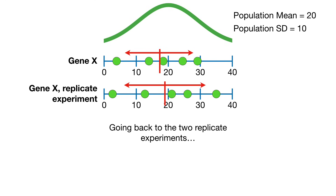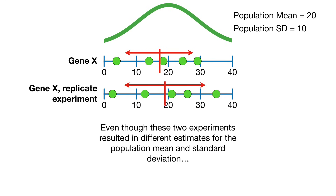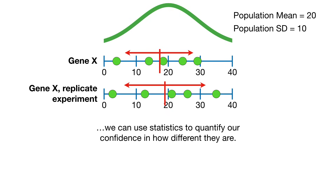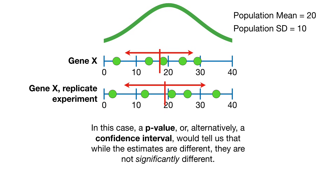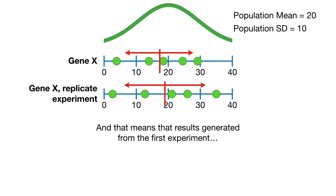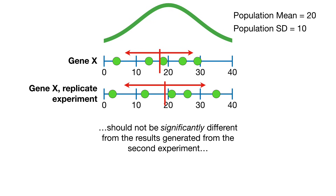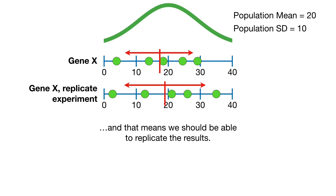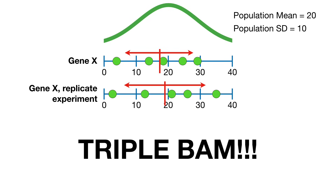Going back to the two replicate experiments, even though these experiments resulted in different estimates for the population mean and standard deviation, we can use statistics to quantify our confidence in how different they are. In this case, a p-value, or alternatively a confidence interval, would tell us that while the estimates are different, they are not significantly different. And that means the results generated from the first experiment should not be significantly different from those from the second experiment, and that means we should be able to replicate the results. Triple bam!